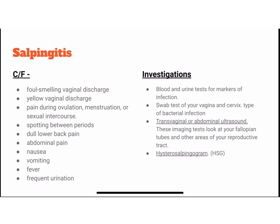The clinical features are foul-smelling vaginal discharge, yellow vaginal discharge, pain during ovulation, menstruation and sexual intercourse, spotting between periods, dull lower back pain, abdominal pain, nausea, vomiting, fever, and frequent urination. Investigations that can be done are blood and urine tests for markers of infection, swab test of the vagina and cervix, transvaginal or abdominal ultrasound, and HSG.